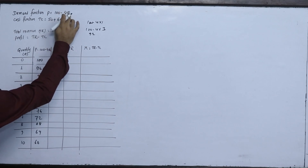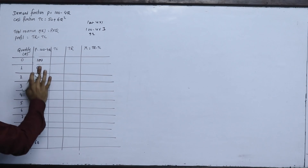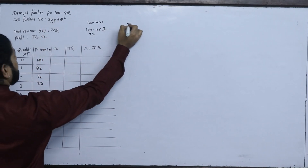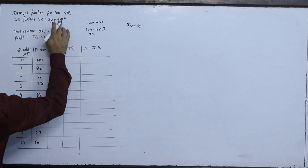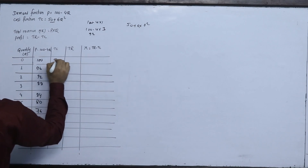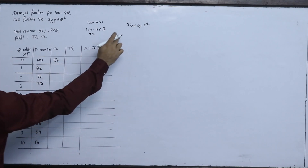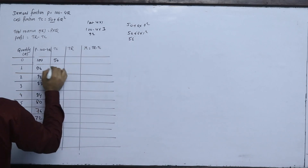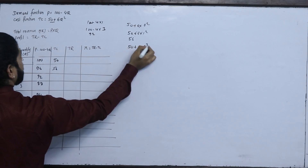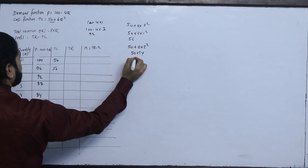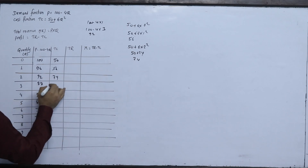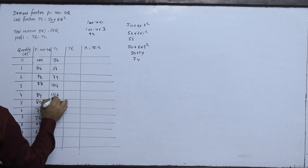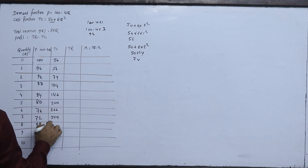For total cost using TC equals 50 plus 6q squared: when q is 0, TC is 50; when q is 1, TC is 56; when q is 2, TC is 74; when q is 3, TC is 104; when q is 4, TC is 146; then 200, 266, 344, 434, 536, and 650.